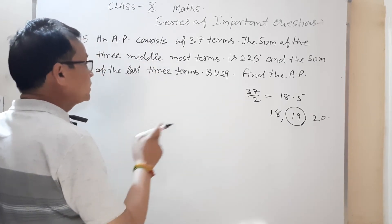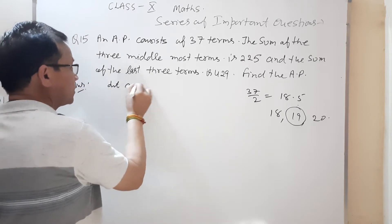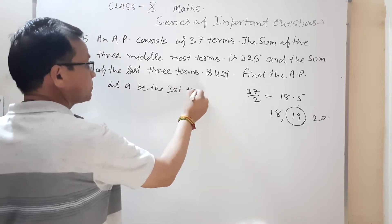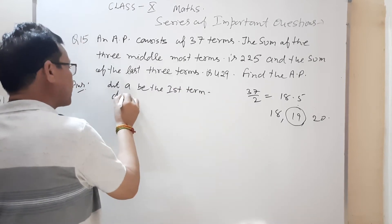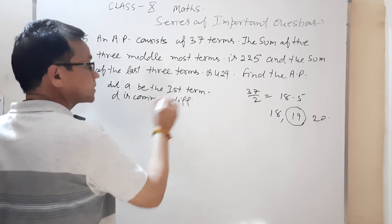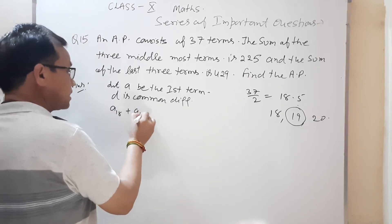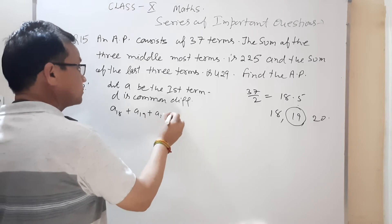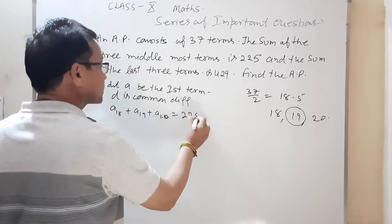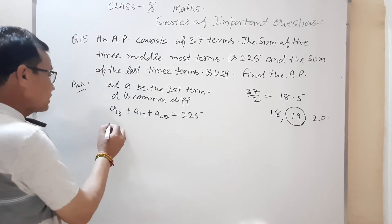Solution में लिख लिया: let a be the first term and d the common difference। अब हमारे पास a₁₈ + a₁₉ + a₂₀ = 225 है। इसको हम convert कर सकते हैं — a₁₈ को क्या लिख सकते हैं?